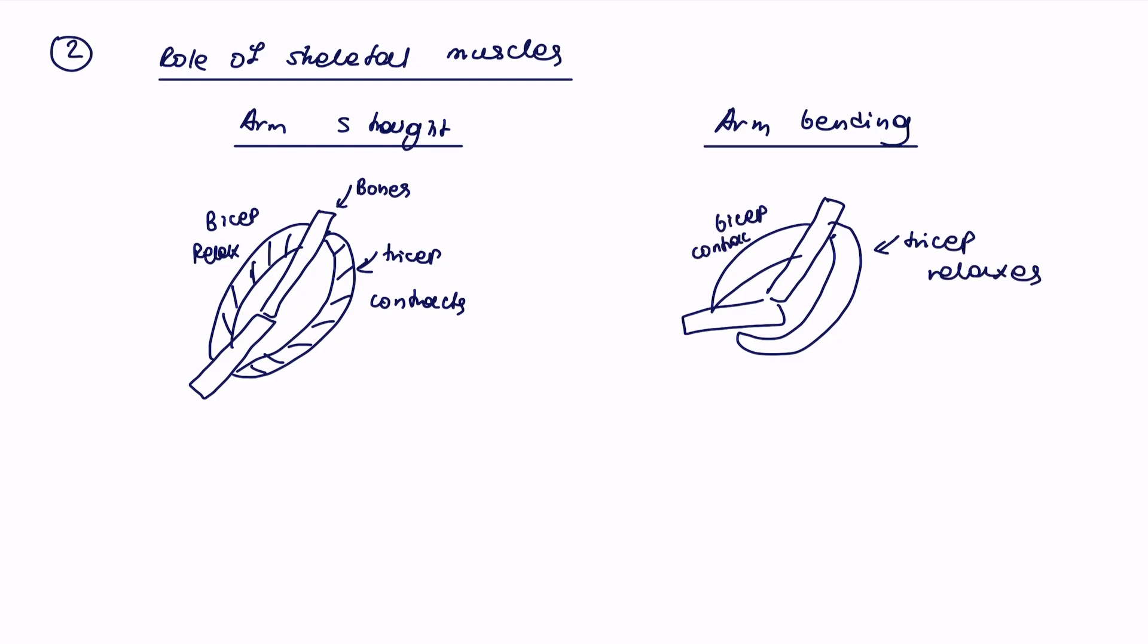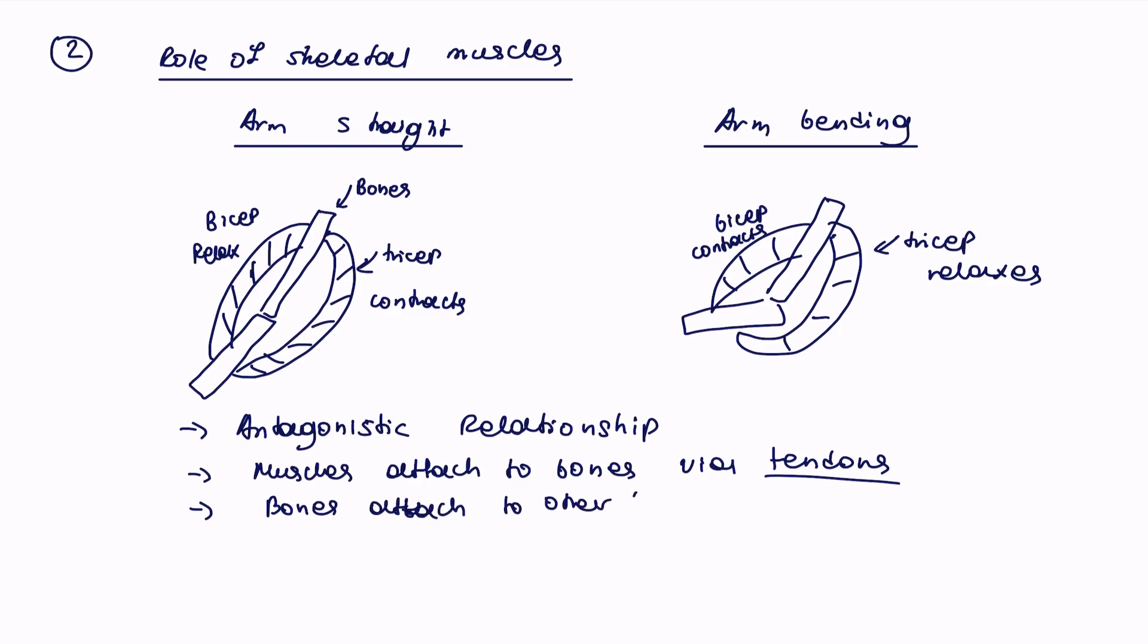This is kind of interesting because it shows to us that these muscles have an antagonistic relationship, meaning one relaxes while the other contracts. You just need to know which way it happens around when it's contracted, when it's straight or bent arm. The other couple of terms you need to know is that the muscles attach to the bones via structures called tendons, and then bones attached to other bones via structures called ligaments. That's about it for the role of skeletal muscles.